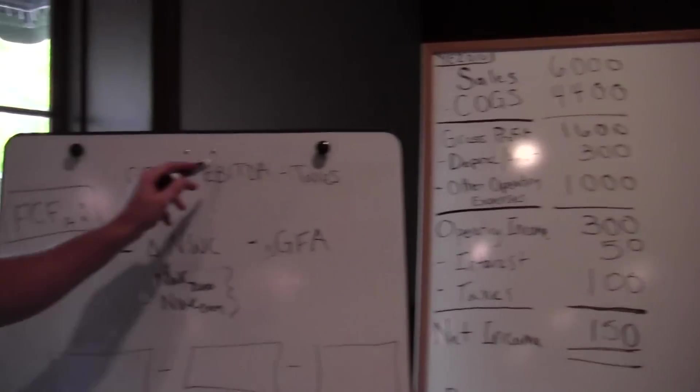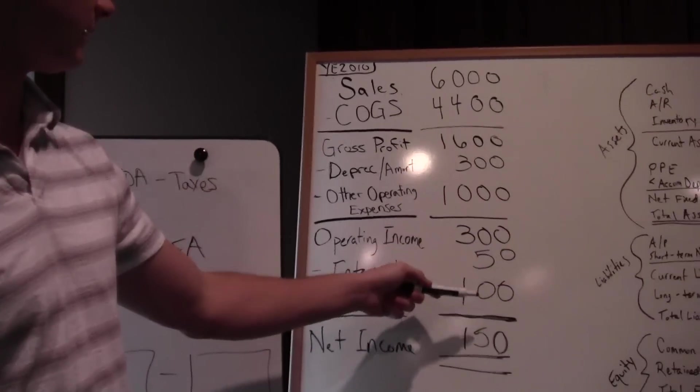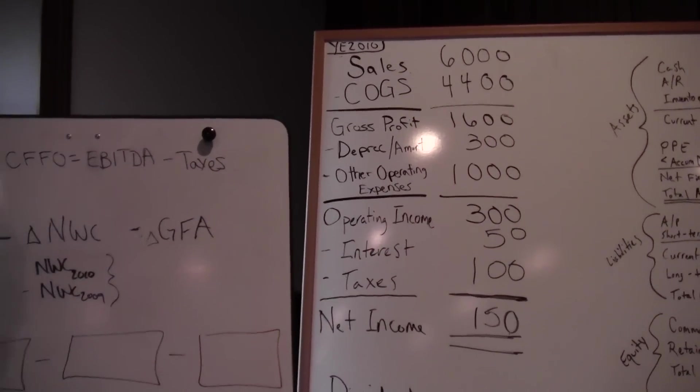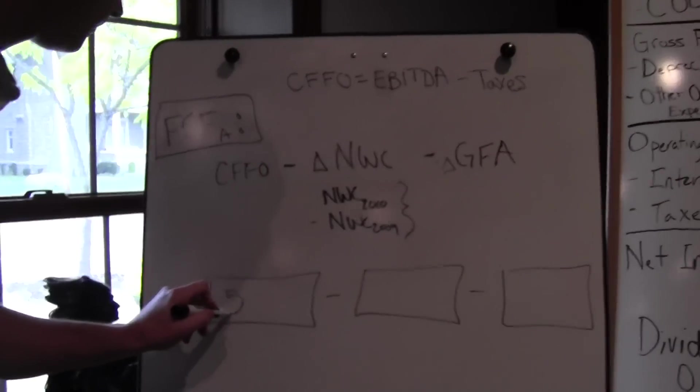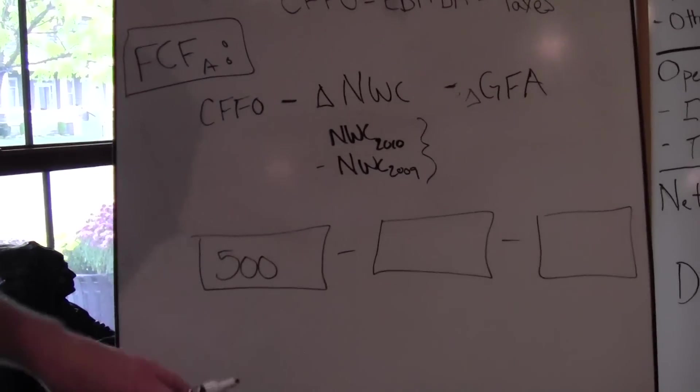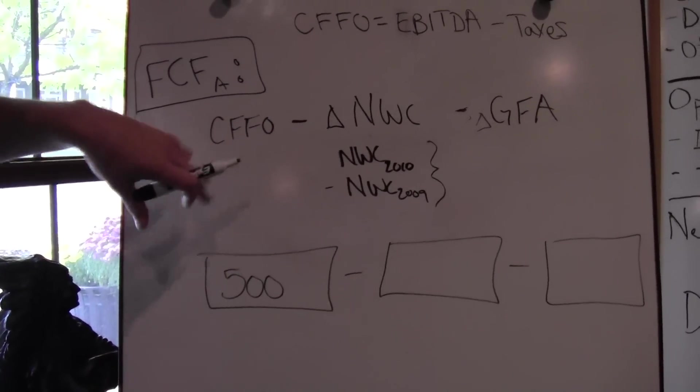But our cash flow from ops says let's take out our taxes again. So that $600, we want to take out the taxes of $100, so that puts us back at $500. I'll put that right in that box there, so that's our cash flow from operations.